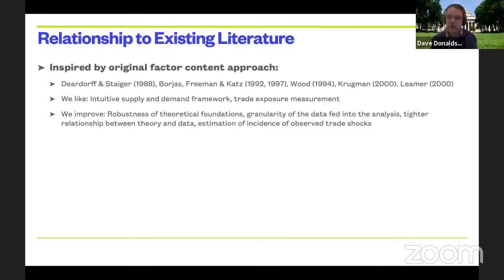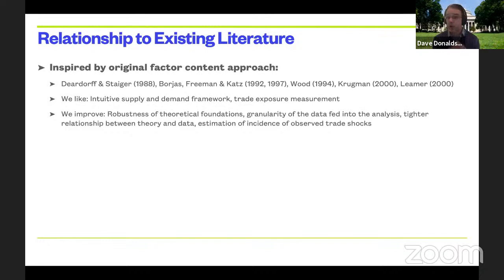What we like about the factor content approach is that it focuses on the heart of the matter: inequality is about differences in factor prices, so it's natural to cast things onto the supply and demand of factors — how trade changes the demand for factors. It also had a nice connection with the data, highlighting sufficient statistics summarizing trade's impact on inequality. However, it relied on relatively strong assumptions, such as countries being inside a cone of diversification so that factor demand is infinitely elastic. We relax those and let the data tell us about the value of those elasticities — no surprise, they're a lot less than infinity.